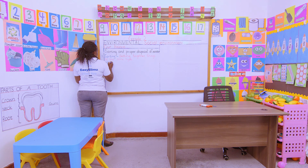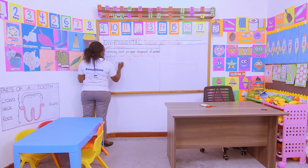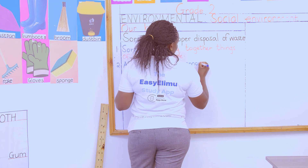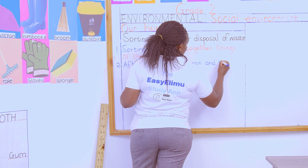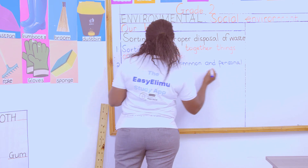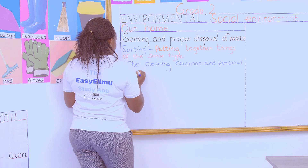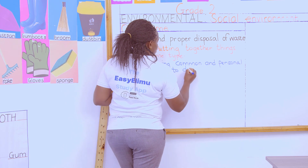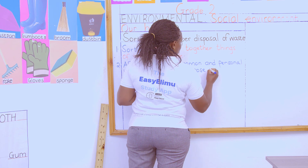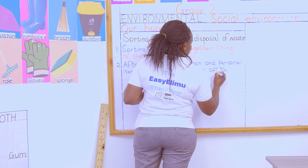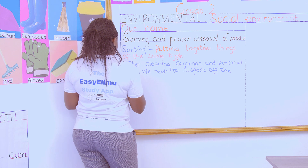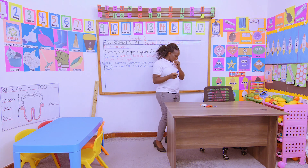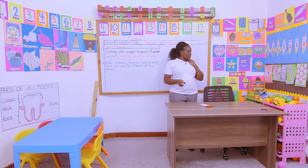We are saying: after cleaning the personal items and the common items, there is some waste we have collected. We are supposed to sort it properly before disposing of it. We need to dispose of the waste properly, and how are we going to do this? We are going to come up with different containers.